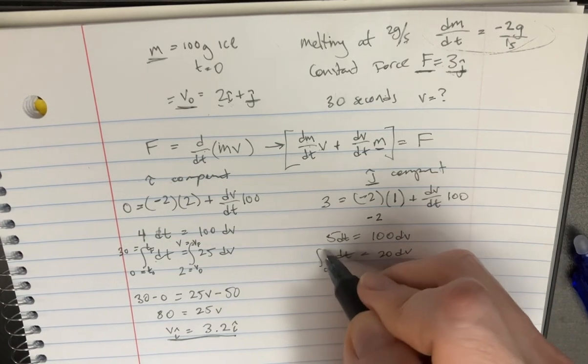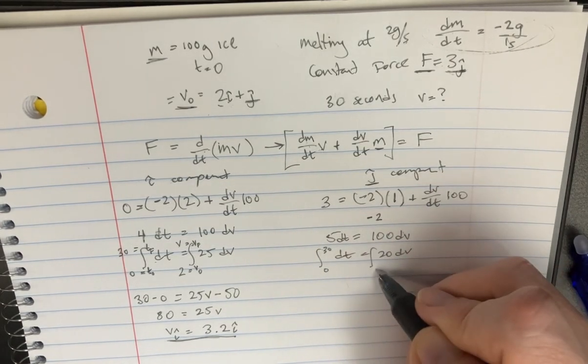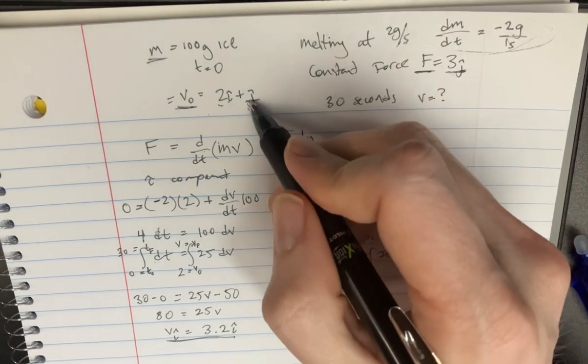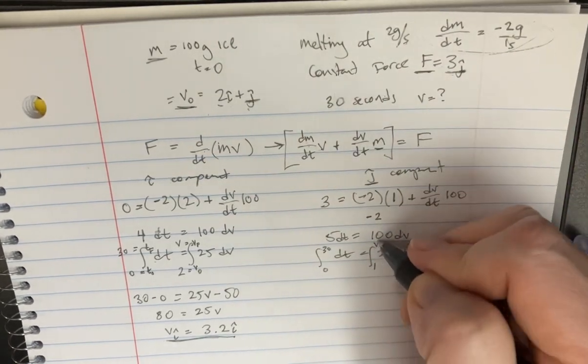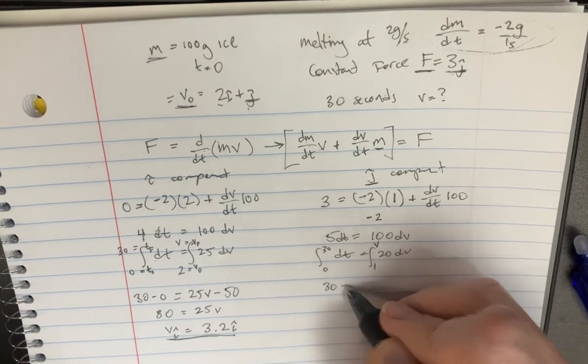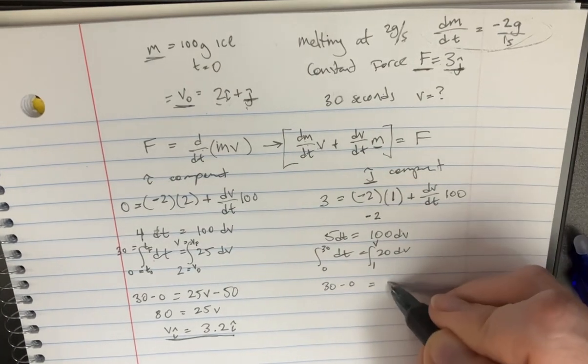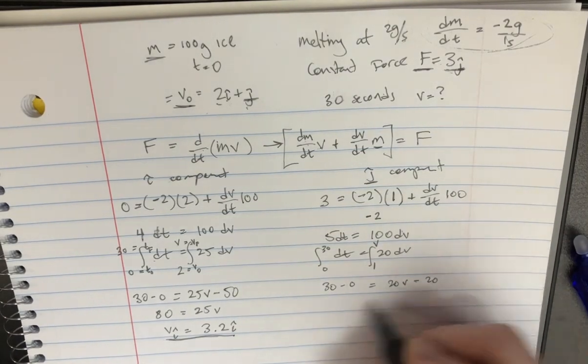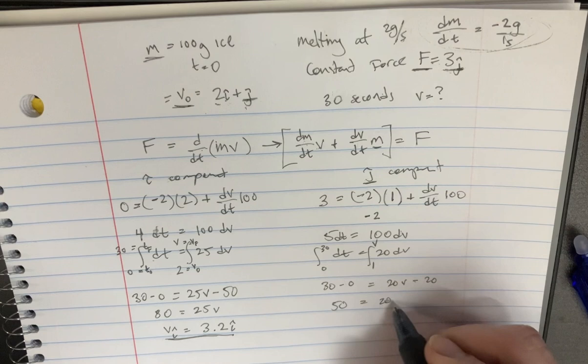We're going to integrate again from 0 to 30. And on this side again from, well, this time the starting point is going to be 1 for j. And then v towards the end over there. So we're going to get 30 minus 0 is equal to 20v minus 20 on that side. And so it's going to be 50 equals 20v.